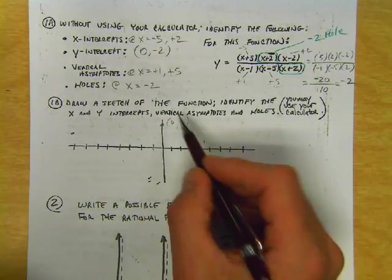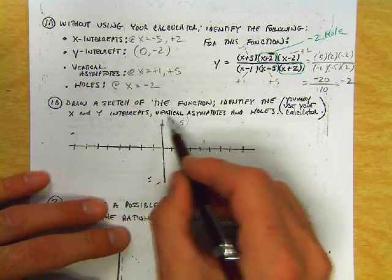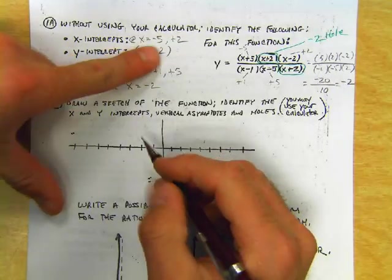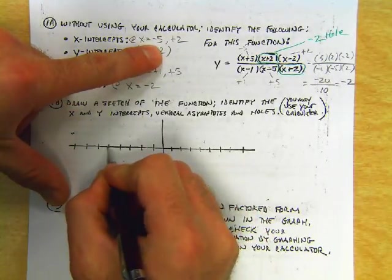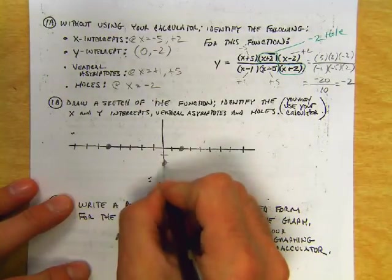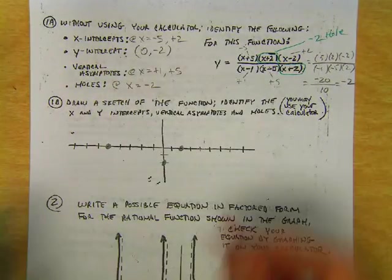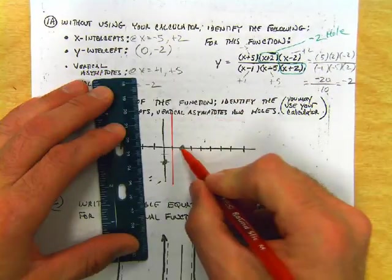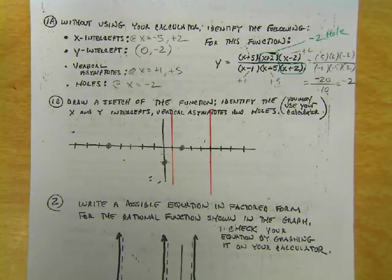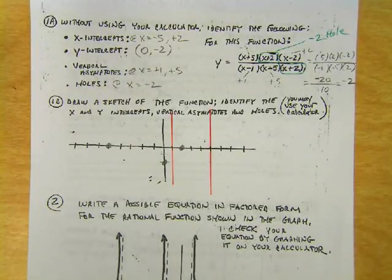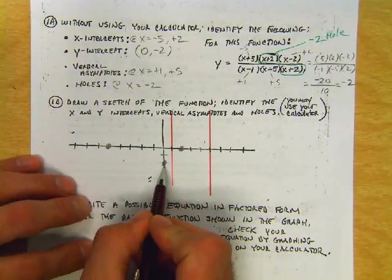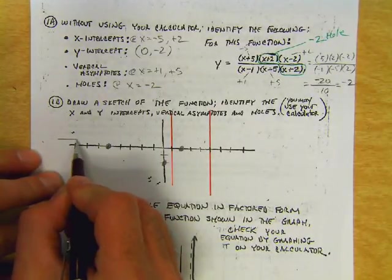Alright, so if you plug in 0 for all these, we would have 5 times 2 times negative 2 divided by negative 1 times negative 5 times positive 2. So, let's see. 5 times 2 is 10 times 2 is 20, and it'll be negative. And then 1 times 5 is 5 times 2 is 10, and negative negative is positive. So negative 20 over 10 is negative 2. That's the y-intercept. Cool? Yeah.